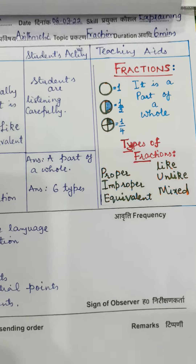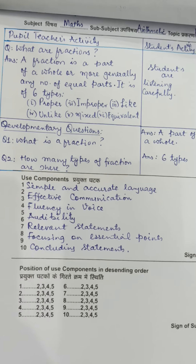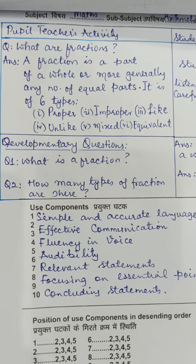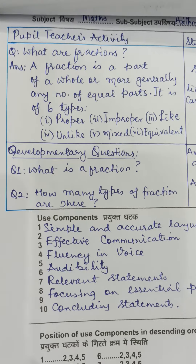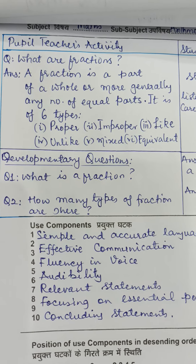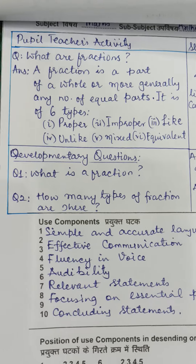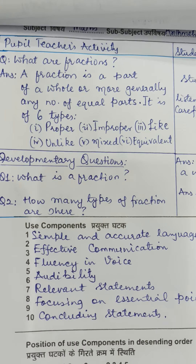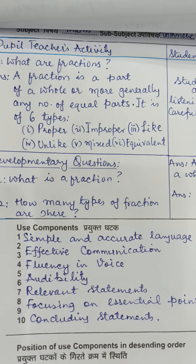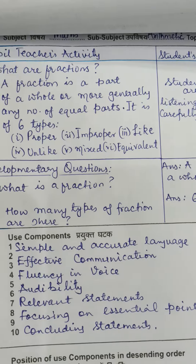The second skill is explaining. In explaining, we ask a question and then give the proper answer. For example: what is a fraction? A fraction is a part of a whole, or more generally, any number of equal parts. We give the definition and then present the types — we have six types: proper, improper, like, unlike, mixed, and equivalent.